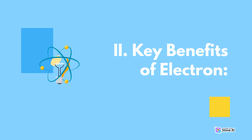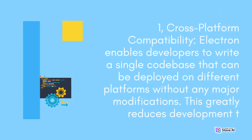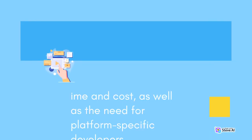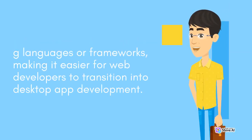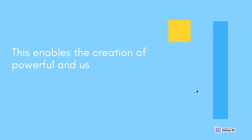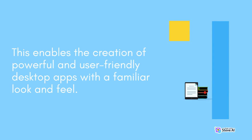Key Benefits of Electron. First, cross-platform compatibility: Electron enables developers to write a single codebase that can be deployed on different platforms without any major modifications. This greatly reduces development time and cost, as well as the need for platform-specific developers. Second, familiar web development skills: Electron leverages web technologies such as HTML, CSS, and JavaScript, eliminating the need to learn new programming languages or frameworks, making it easier for web developers to transition into desktop app development. This enables the creation of powerful and user-friendly desktop apps with a familiar look and feel.